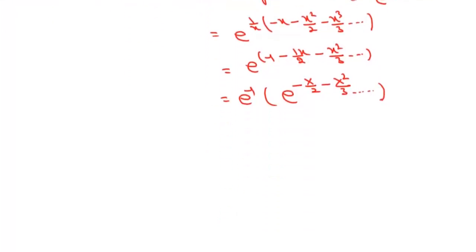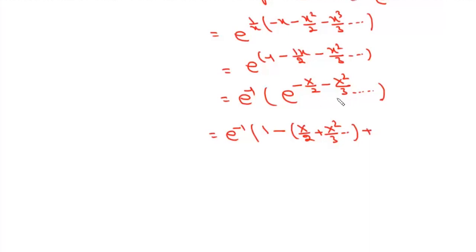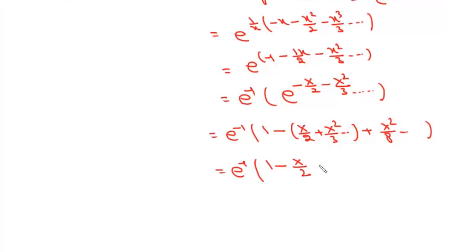This inner part is an expansion of e^(minus u) where u equals x/2 plus x²/3. Using the expansion e^(minus u) = 1 minus u plus u²/2! ..., and noting that the square of (x/2 plus ...) gives x²/4, we keep terms up to x². So we get e^(minus 1) times (1 minus x/2 minus x²/3 plus x²/8), which gives e^(minus 1) times (1 minus x/2 minus 5x²/24).